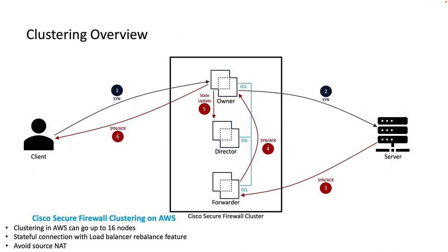At a very high level, clustering is grouping multiple virtual devices as a single logical unit. In a cluster, we can go up to 16 nodes, and we also have a special link that uses VXLAN, known as the cluster control link, or CCL for short. Using CCL, we forward any asymmetric traffic, share state, and share other information required for clustering.